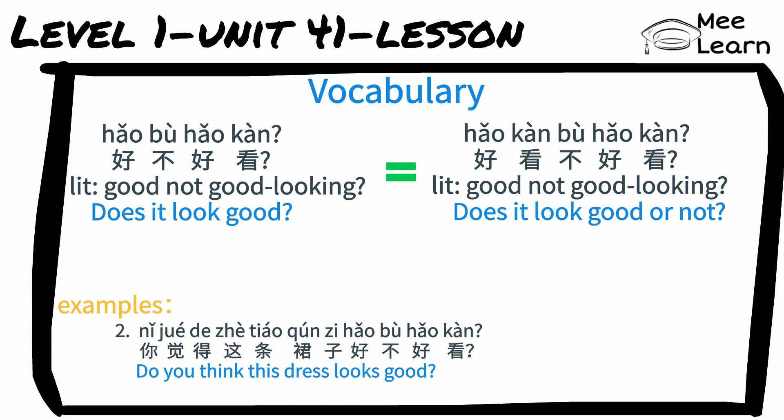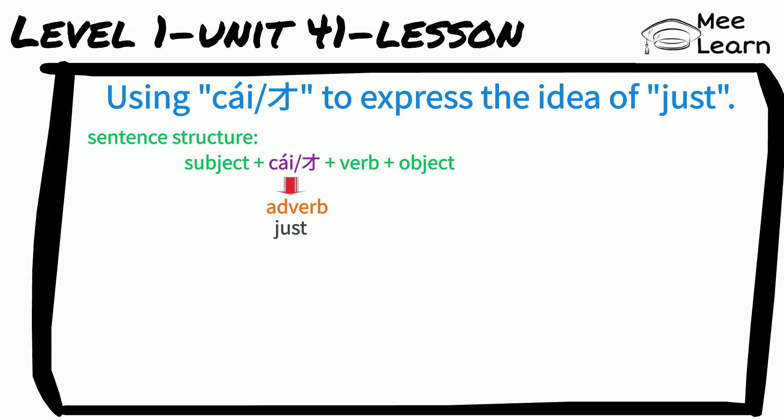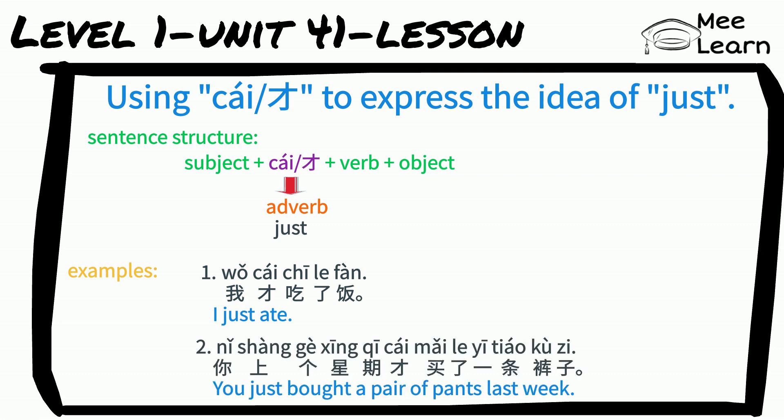Using 才 to express the idea of 'just.' Note that 才 here is an adverb, usually put in front of a verb. For example: 我才吃了饭 — I just ate. With 才 in the sentence, it sends a message: 'I just ate, I don't need it anymore.' 你上个星期才买了一条裤子 — You just bought a pair of pants last week. 才 indicates it's not long since you bought them.